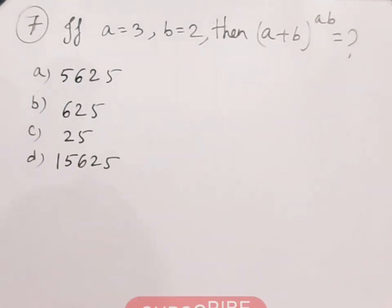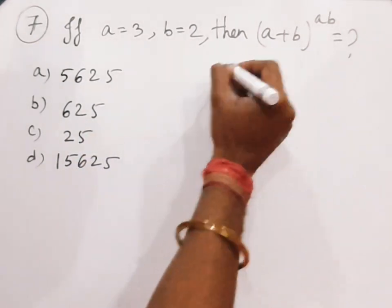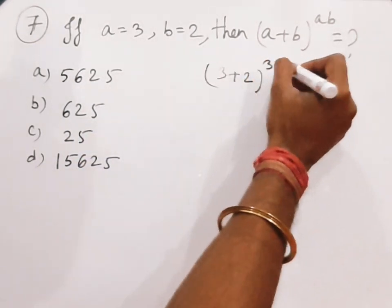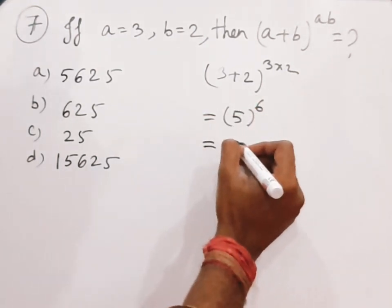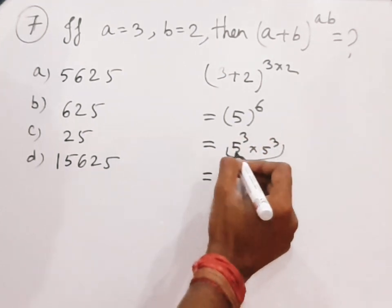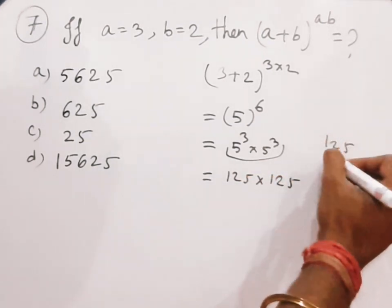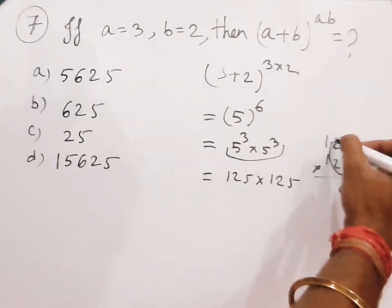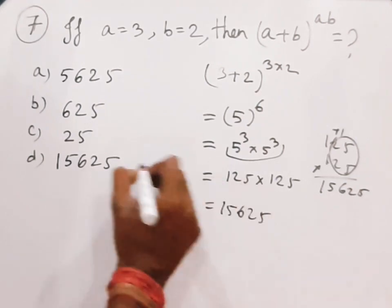The question is: if a equals 3 and b equals 2, then (a + b) to the power (a × b) equals? So (3 + 2) to the power (3 × 2) equals 5 to the power 6. For calculation we split it as 5³ × 5³, that is 125 × 125, and 125 × 125 equals 15,625. So 15625 is the answer.